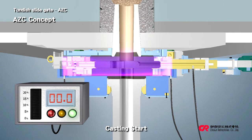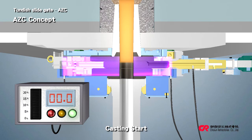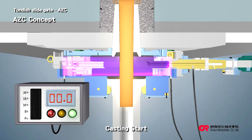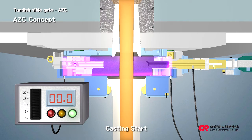Receive molten steel from the ladle at an oxygen level of 0% inside the AZC housings, then open the AZC gate to get started with the continuous casting work. You can monitor the sealing of the AZC gate at any time during casting.